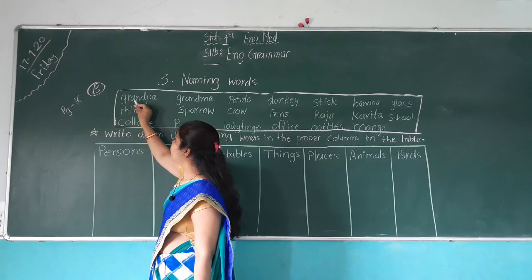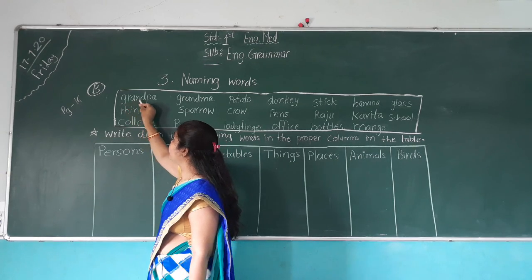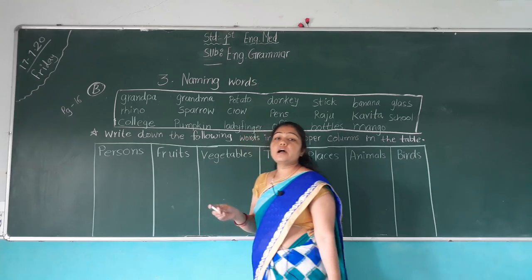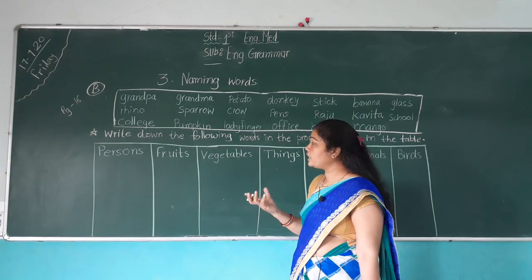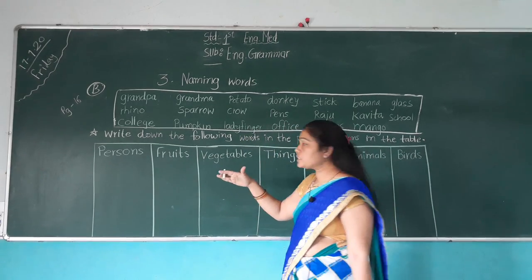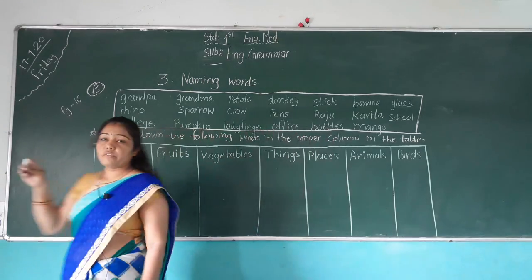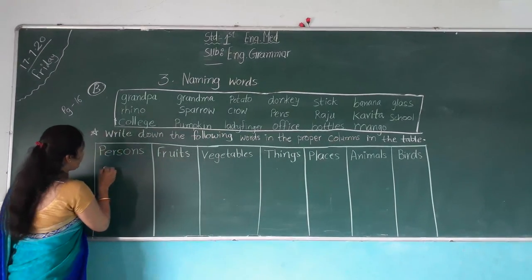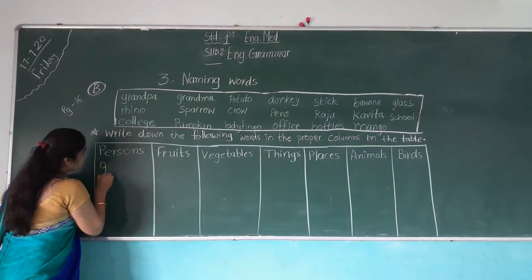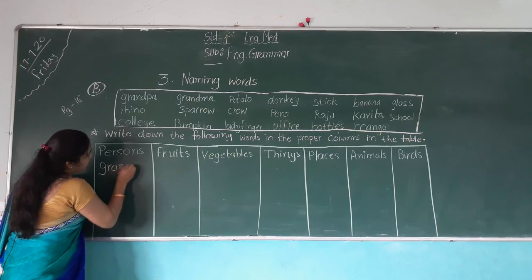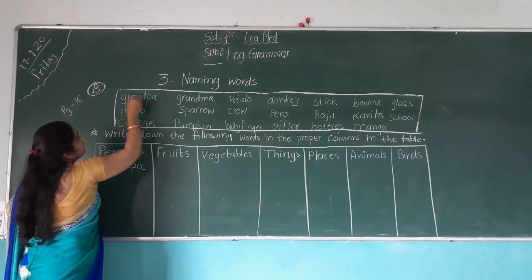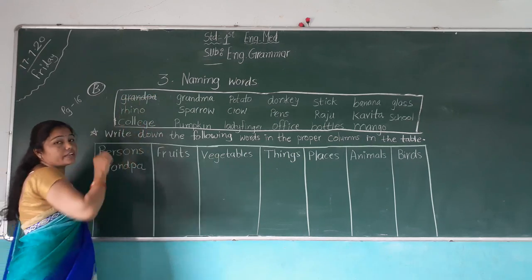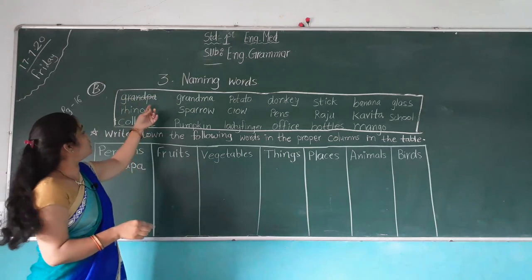First, read the spelling — G-R-A-N-D-P-A — Grandpa. Grandpa is the name of a person. So where do we write it? In the person column. We write Grandpa. Cut this spelling so we do not count it again.